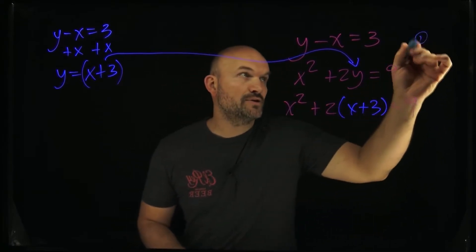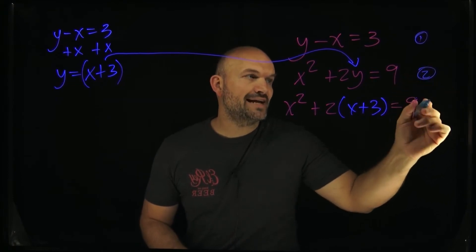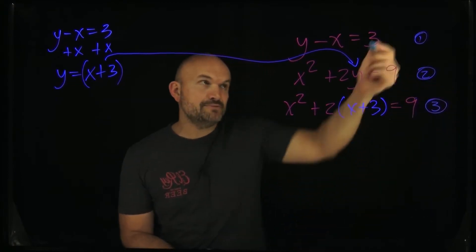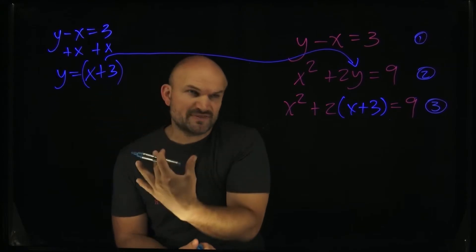OK. So what I want you to see is we had our original equation, our second equation, and now we created our third equation. Now again, I manipulated equation number one, right, to solve for a variable, but it was fairly simple.